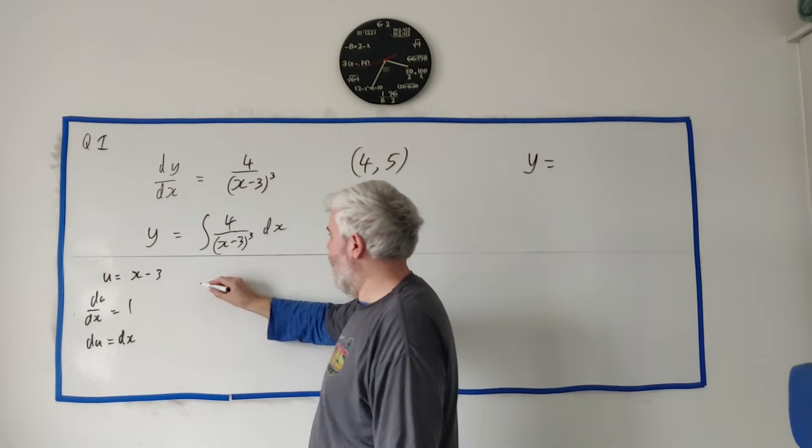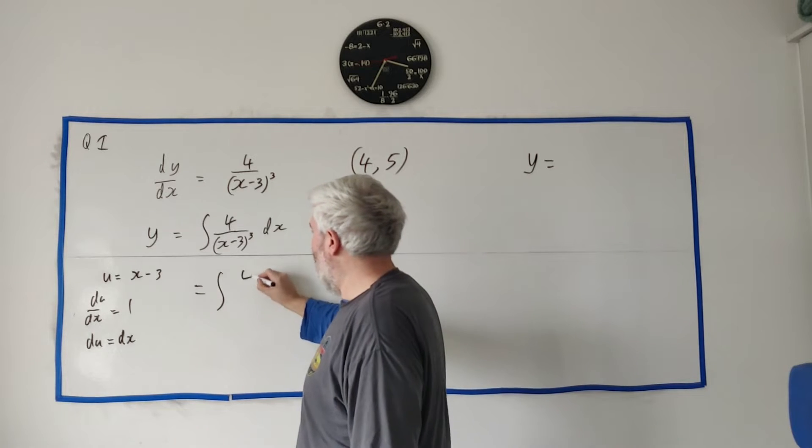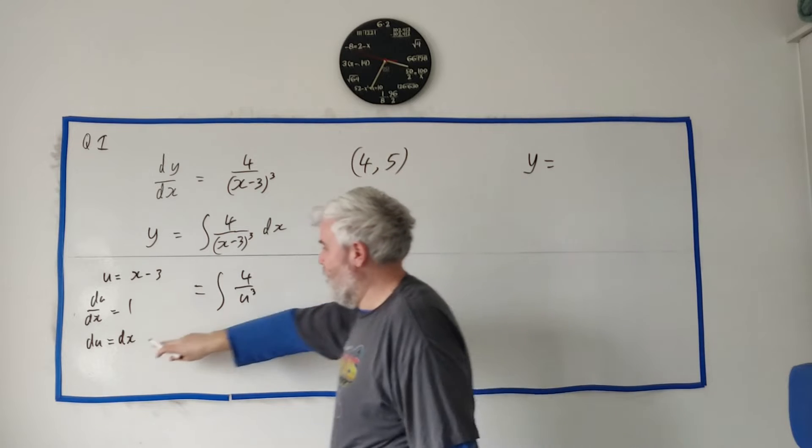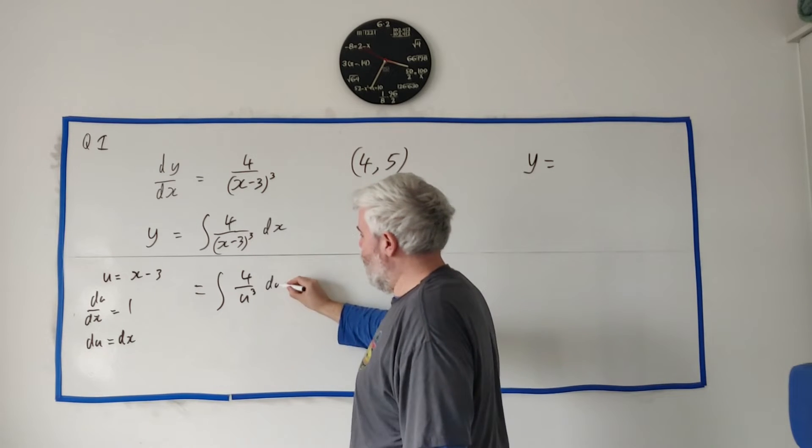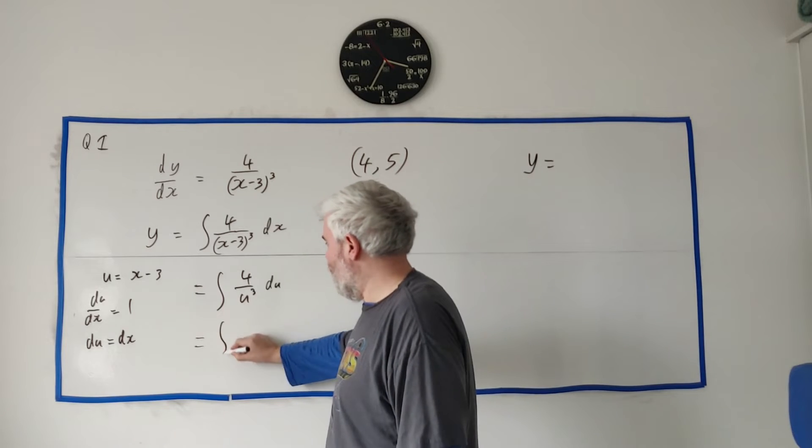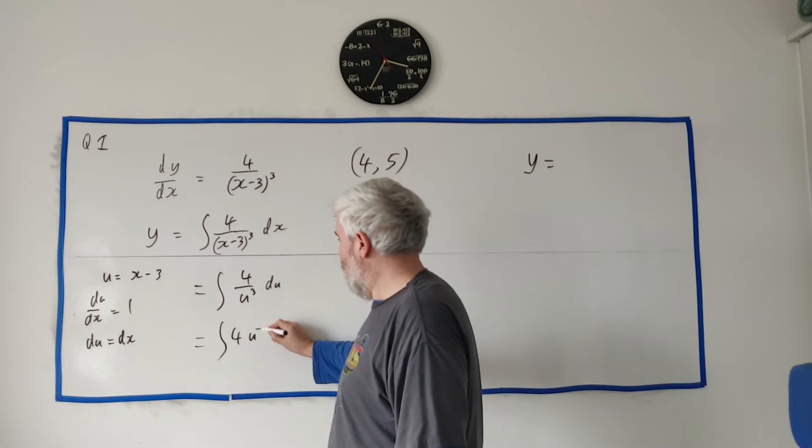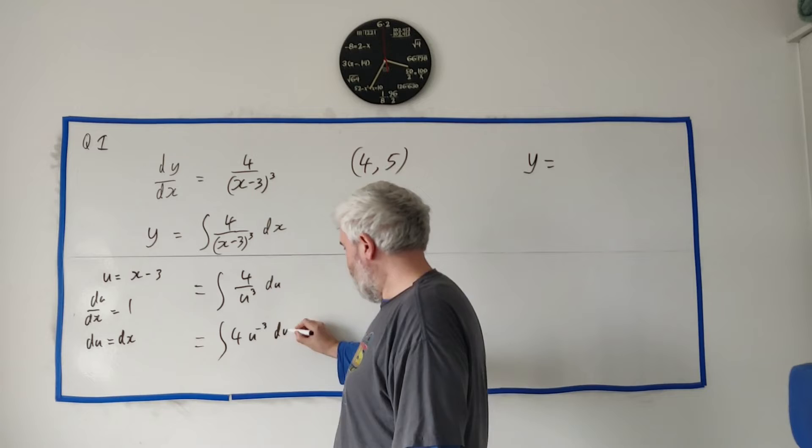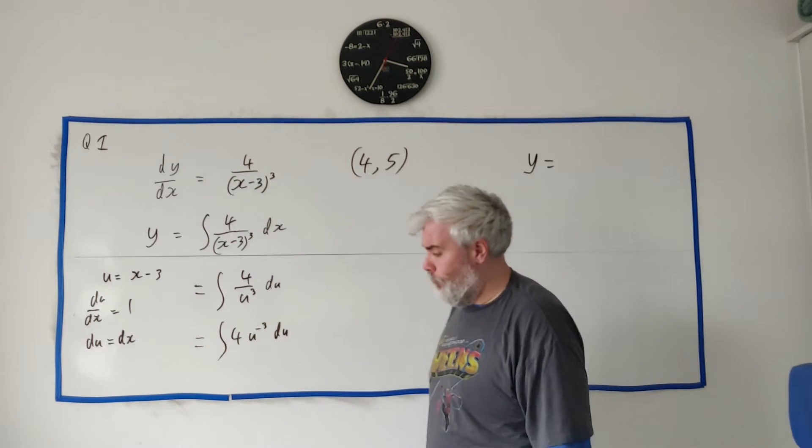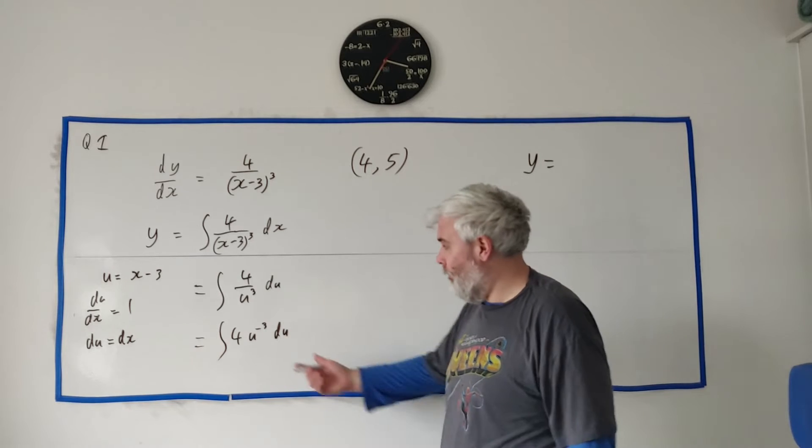So if I substitute all of that, this comes out as the integral of 4 over u cubed. And instead of dx, it's equal to du. So I can just go ahead and change it. And I also usually change this to the integral of 4 times u to the minus 3 du. Because now I can just use the normal formula for integration.